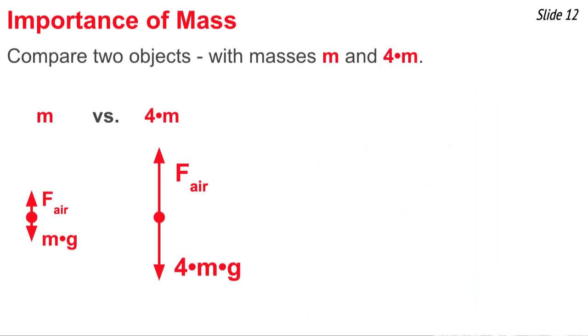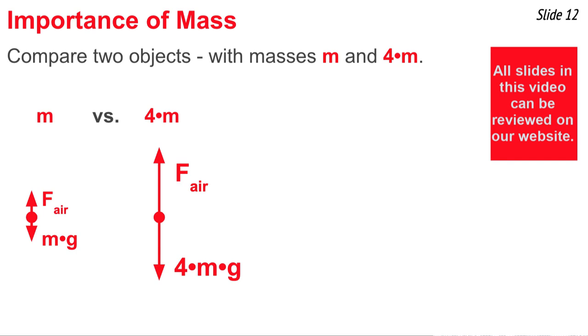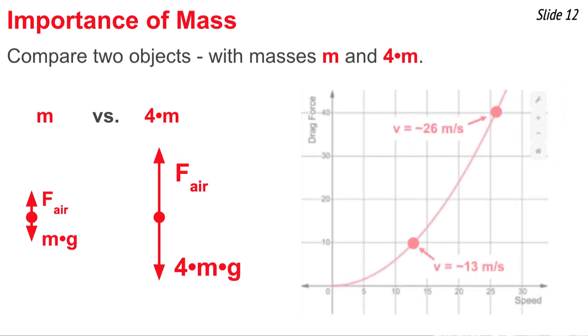Let's look at the importance of mass a little bit deeper by considering two objects with masses m and 4m. The more massive object with 4m has four times the downforce, and because of that, it requires four times as much upforce to bring it to terminal velocity. Because the air resistance force depends upon the square of the speed, in order to get four times as much air resistance force, you'd have to have twice as much speed. So if the mass of m requires a speed of 13 meters per second to reach terminal velocity, the object with four times the mass would have twice the speed of 26 meters per second.